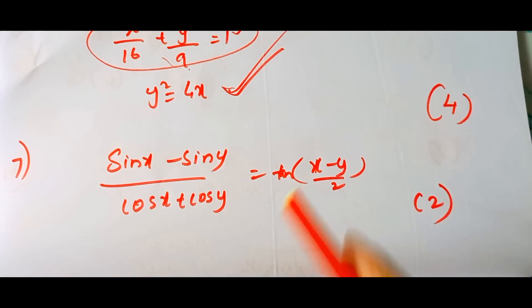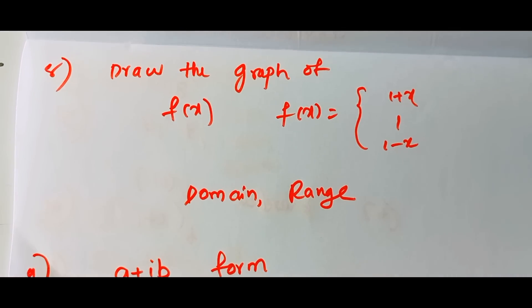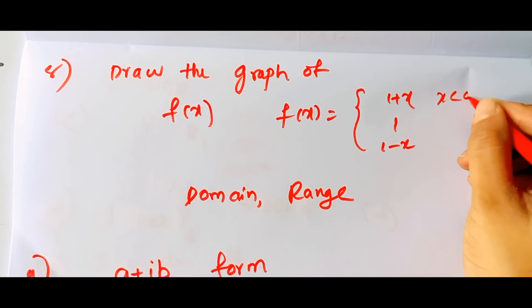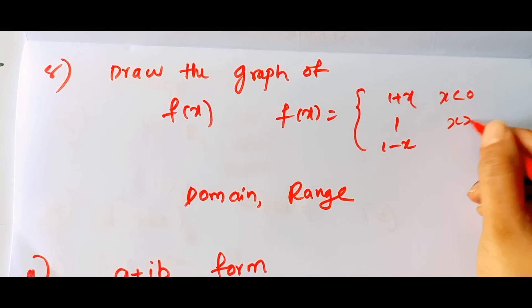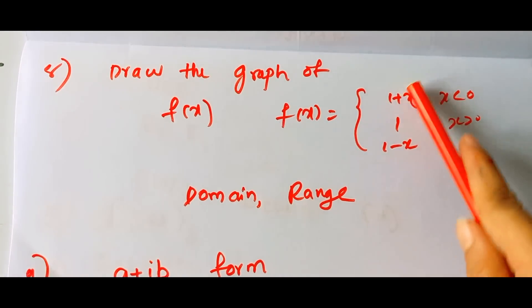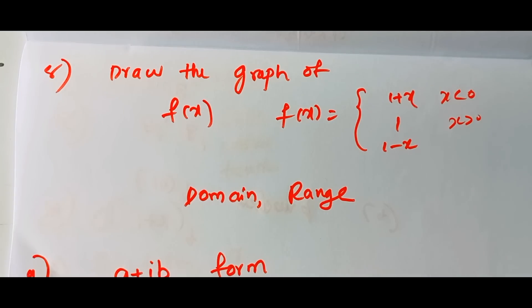We will be able to see this graph. We will have a function in this graph. We will see x less than 0, x greater than 0. We will be able to see this graph and this type.